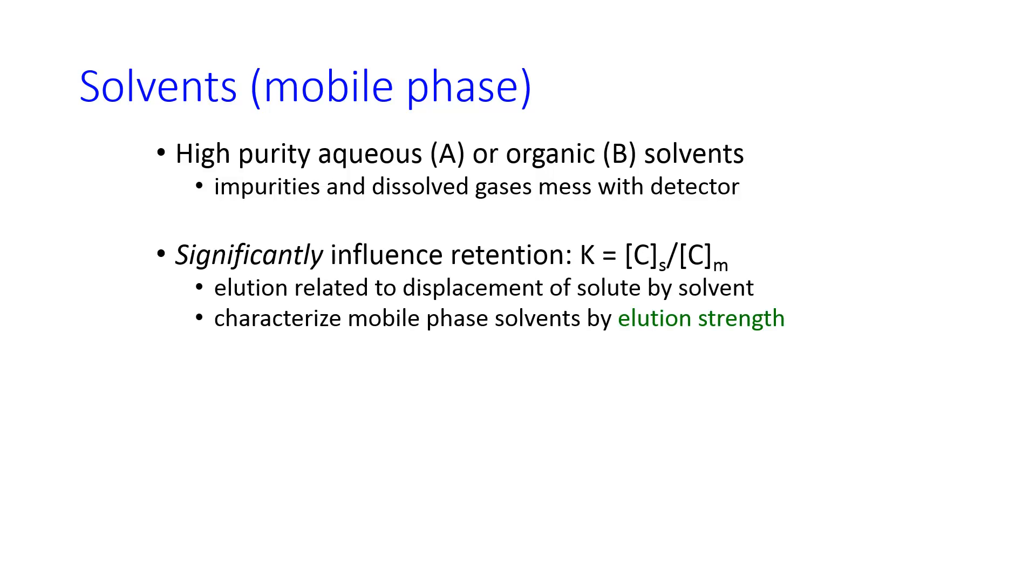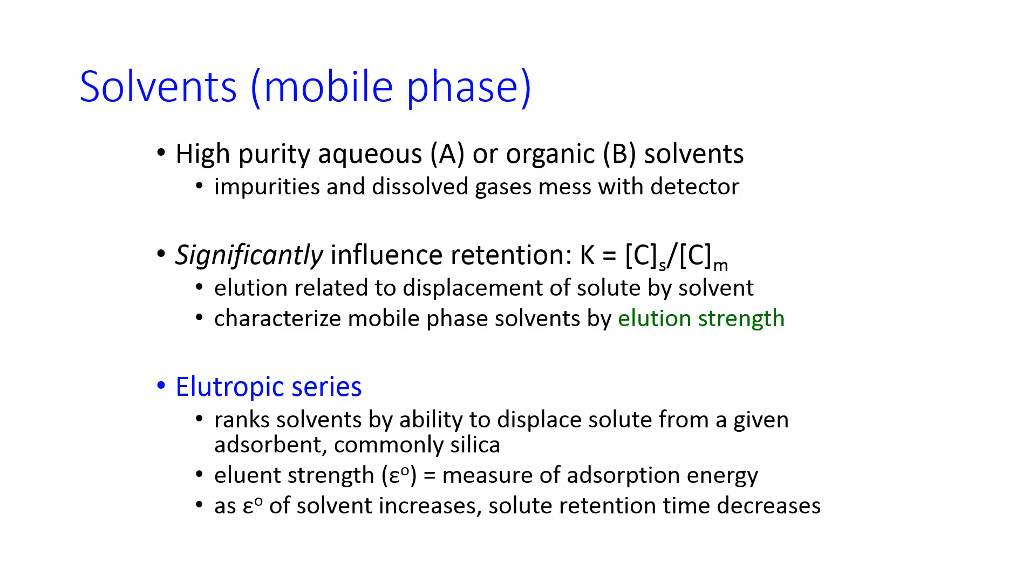The solvents that you use significantly influence the retention. So changing the different solvents that make up the mobile phase can have a powerful effect on the amount of separation that your HPLC is able to do. Solutes are ranked by their ability to displace the solute from the column in a series called an elutropic series. And what this means is that some solvents are better at moving some analytes through the column. Others are better at leaving the analytes on the column and increasing their retention time.